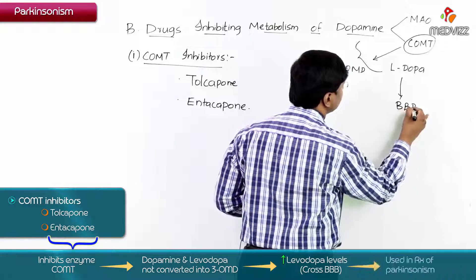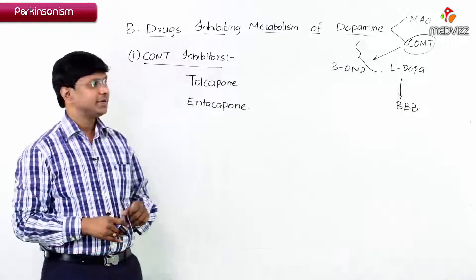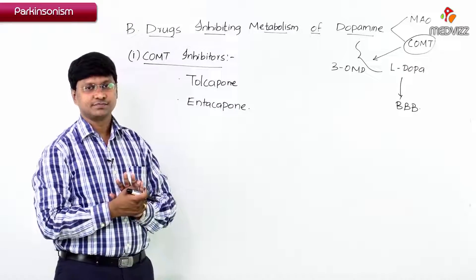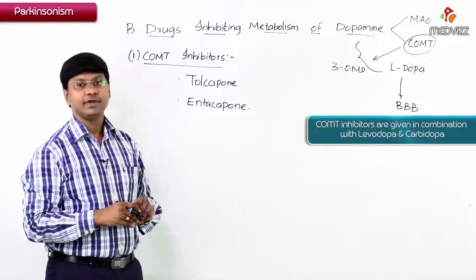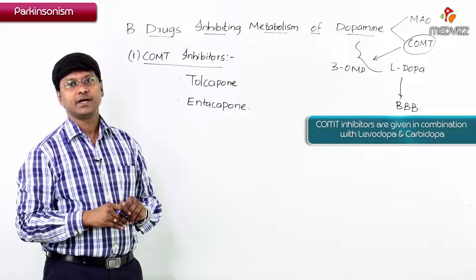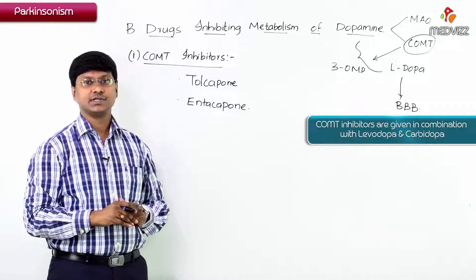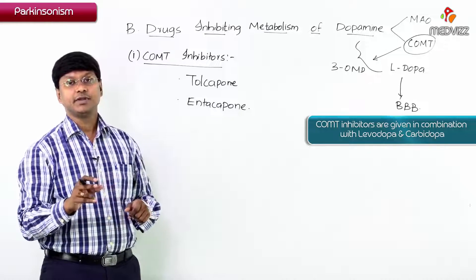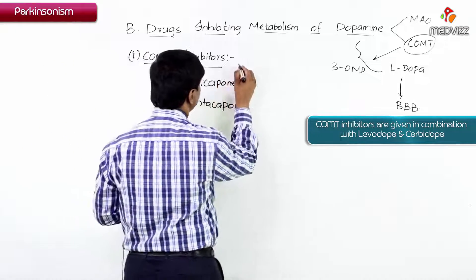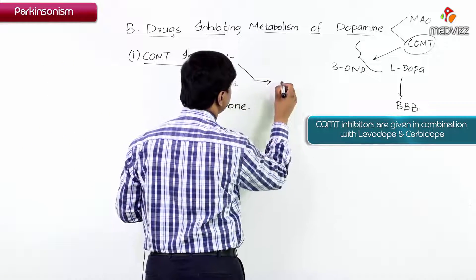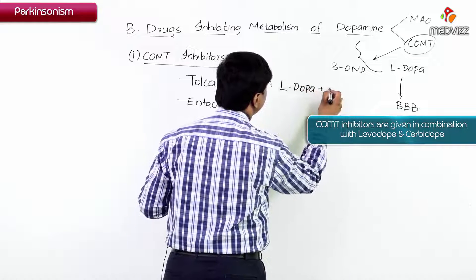The increased levodopa levels allow it to cross the blood-brain barrier, which is useful for the treatment of Parkinsonism. These COMT inhibitors can be given in combination with levodopa plus carbidopa.